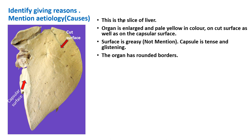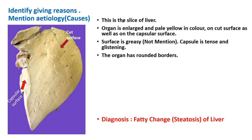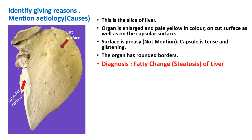The surface is greasy on cutting, though you need not mention this in the museum specimen description. An important feature is the rounding of the borders due to cytoplasmic accumulation of fat. So rounding of the border, pale yellow color, enlarged organ — the diagnosis is fatty change of liver, or steatosis. Steatosis means fatty change.